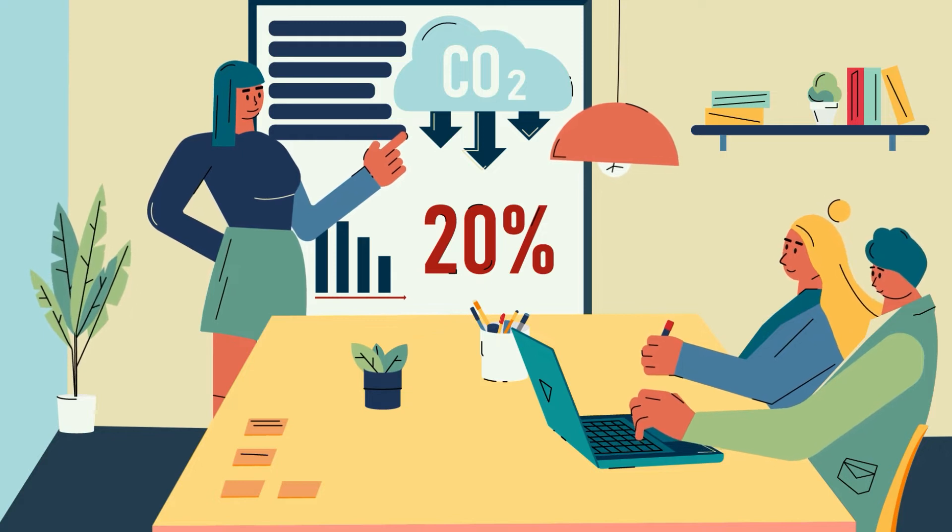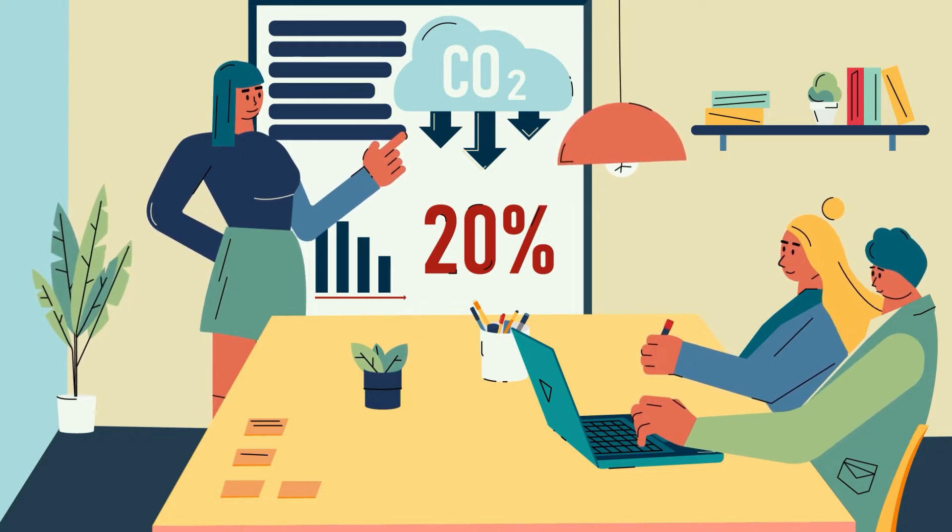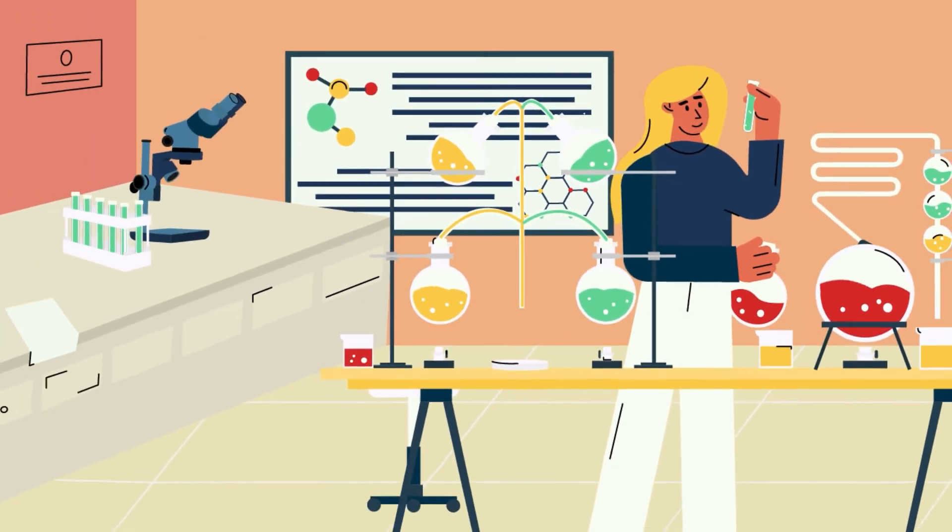But how do you know whether this is the right reduction and the right timeframe? Why should you set science-based targets?